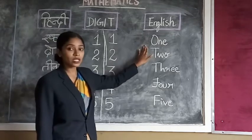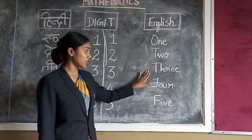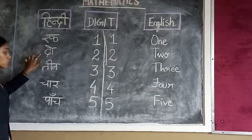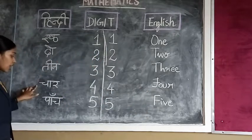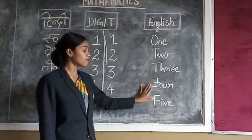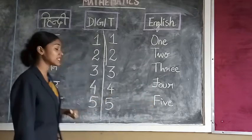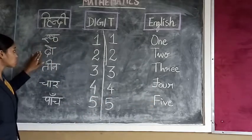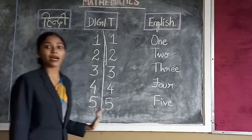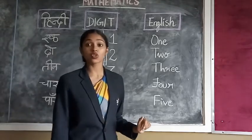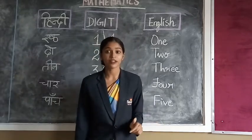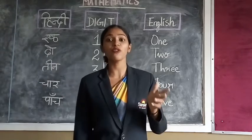We'll write one, two, three, four, five. And in Hindi: ek, do, teen, chaar, paanch. Say it with me. And in English: one, two, three, four, five.